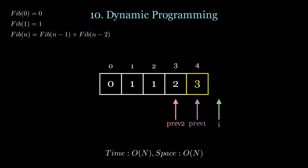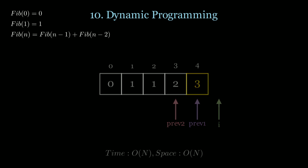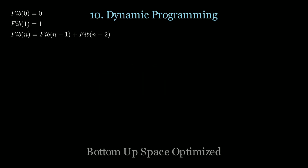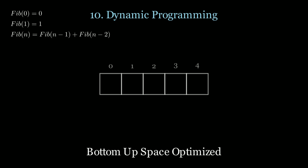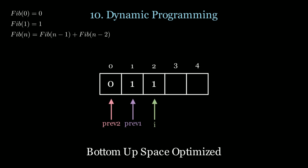The time complexity for this is O(n) and we have O(n) space. However, the bottom-up solution is generally preferred because you can be more efficient with the space. For instance, did we really need the entire array? No — we only cared about the last two numbers. Therefore, instead of an array, we could use just two variables, prev2 and prev1, and solve this in constant space.